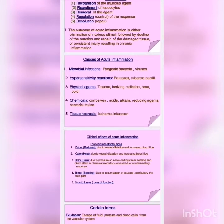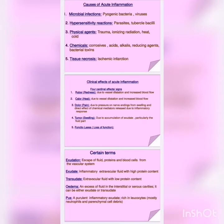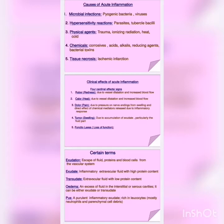Causes of acute inflammation: microbial infections, hypersensitivity reactions, physical agents, chemicals, and tissue necrosis. Clinical features of acute inflammation — there are four cardinal signs at the site of acute inflammation. Rubor means redness, due to vascular dilation and increased blood flow. Calor means heat — where blood flow increases due to vascular dilation, exudate or transudate begins to form there and there is heat. Third is pain, due to pressure on nerve endings from swelling and direct effect of chemical mediators released due to the inflammatory response. Fourth is tumor meaning swelling, due to accumulation of exudate particularly the fluid part. Fifth is loss of function.